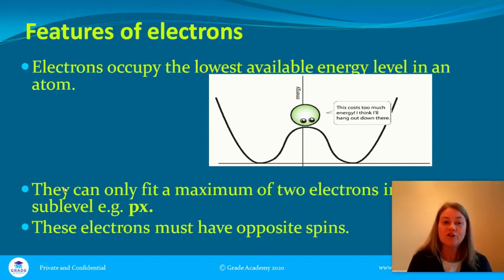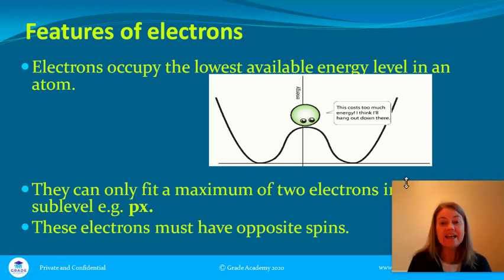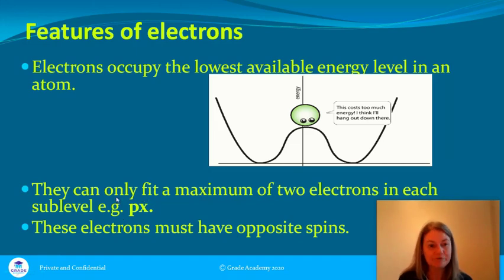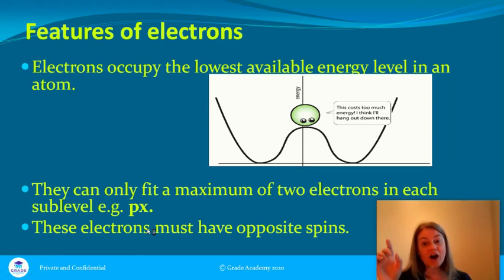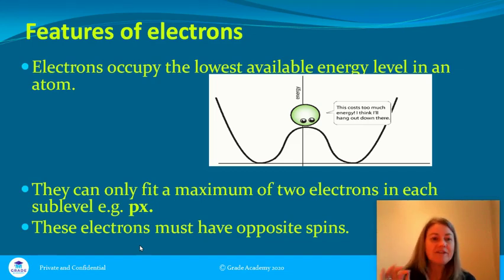The other thing is you can never fit more than two — there's a maximum of two electrons in any of the orbitals, in each of the sublevels and in the orbitals. In the orbitals, you can only have a maximum of two. And the other thing is the electrons have to have opposite spins — one going up and the other going down. So the three things: they occupy the lowest available energy; only two can get into any orbital; and the third is they have opposite spins.